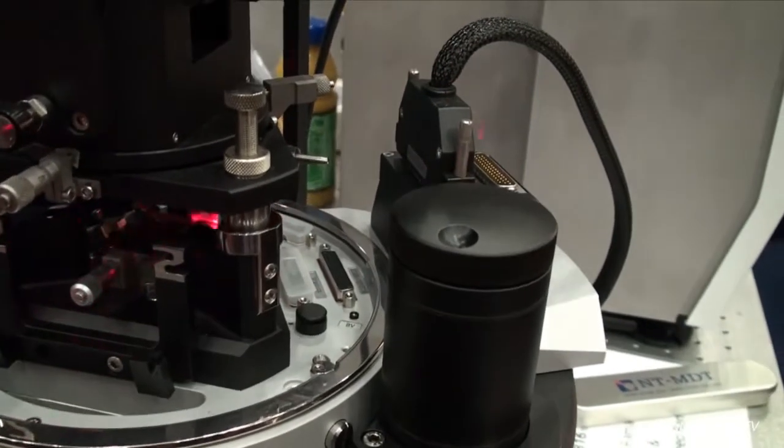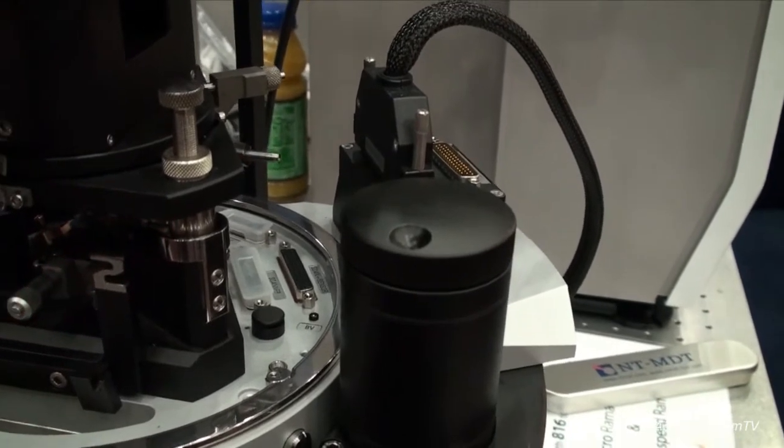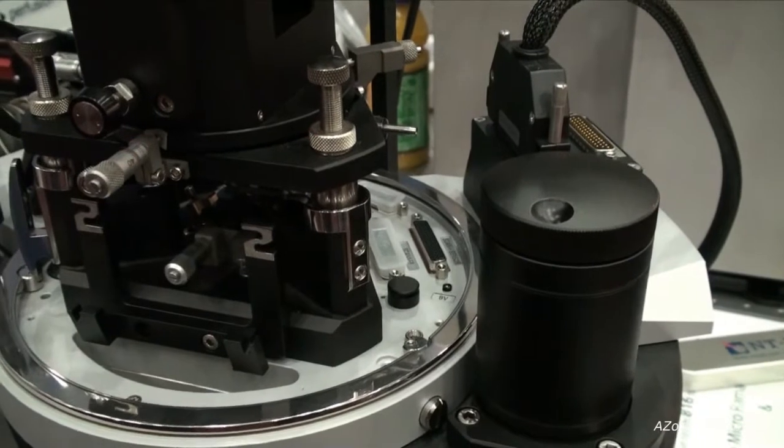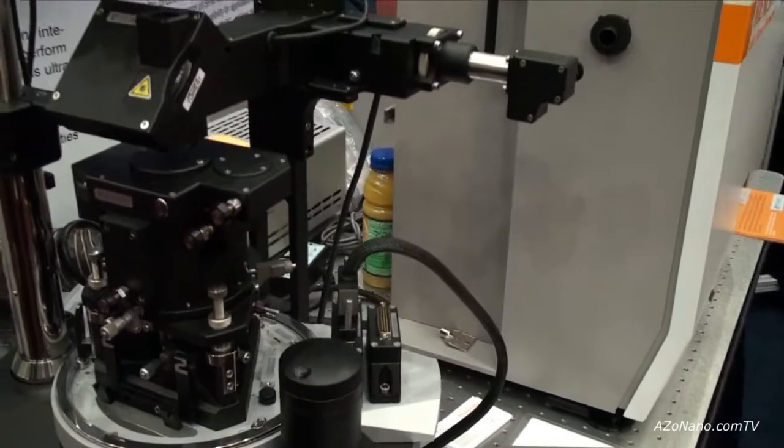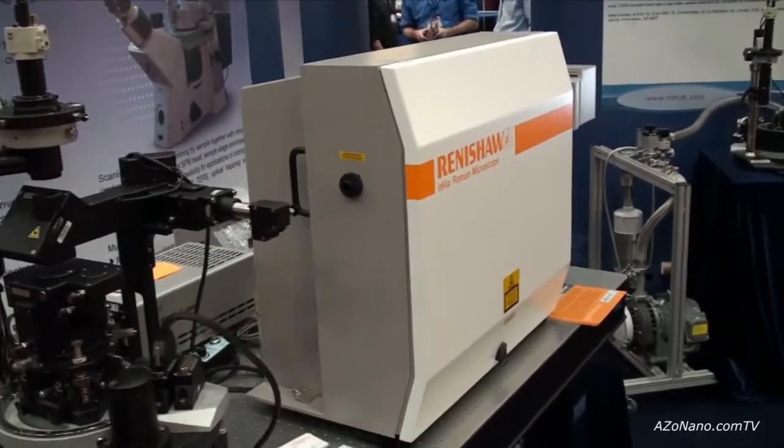To do that, you see this triangle has no scanner anymore. It has internally built objective which together with special optics—which is actually an optical microscope—provides the connection to the Raman spectrometer, which is a Renishaw spectrometer.